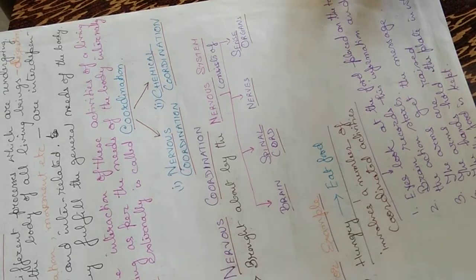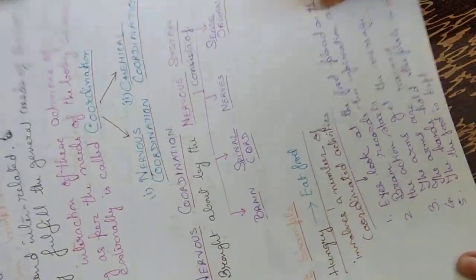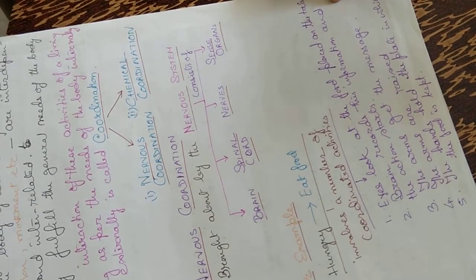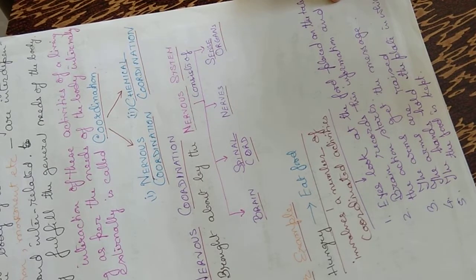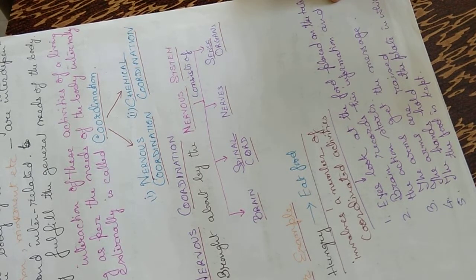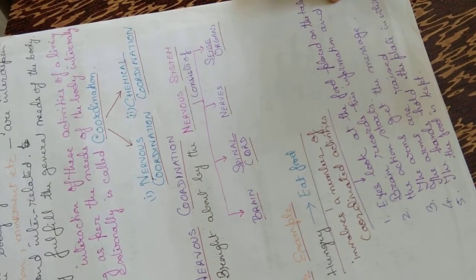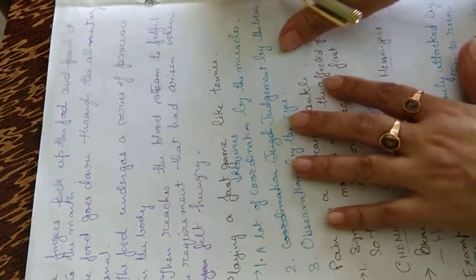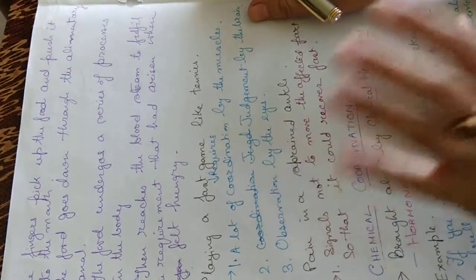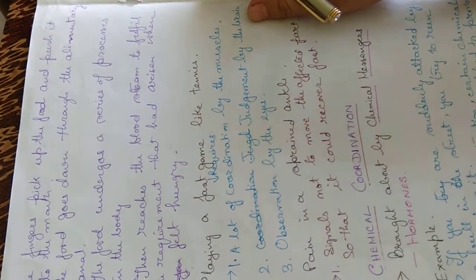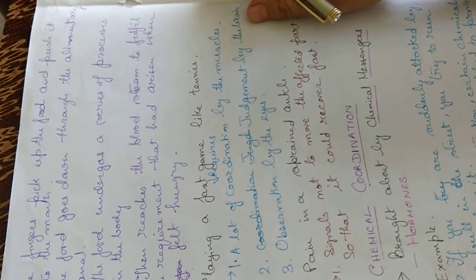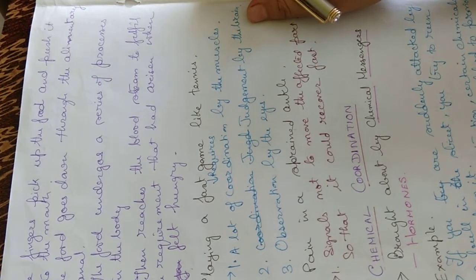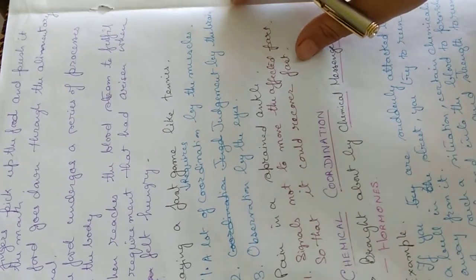Eating food involves a number of coordinated activities. The eyes look at the food placed on the table. The brain records this information and the action starts — the arms get the message from the brain, the arms are raised, the hands hold the plate, the fingers pick up the food and push it into the mouth. The food goes down through the alimentary canal and undergoes digestive processes, then reaches the bloodstream to fulfill the requirement that had arisen when we felt hungry.